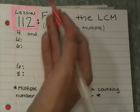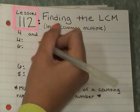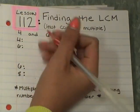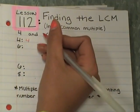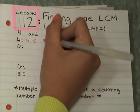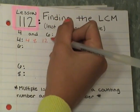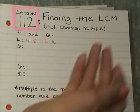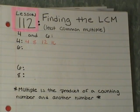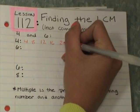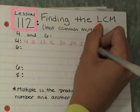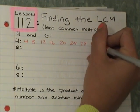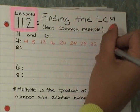I need to find the multiples of 4. So I think about: 4 times 1 is 4, 4 times 2 is 8, 4 times 3 is 12, 4 times 4 is 16, 4 times 5 is 20, 4 times 6 is 24, 4 times 7 is 28, 4 times 8 is 32, and 4 times 9 is 36.